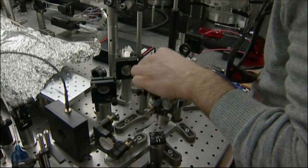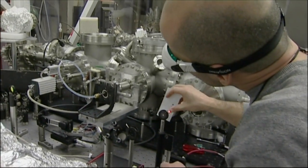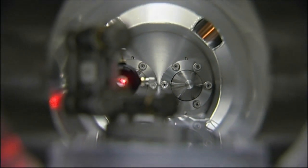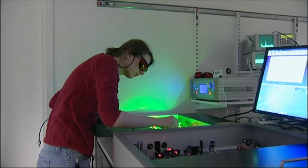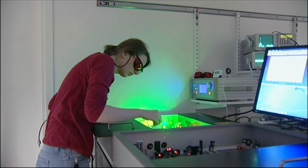We measure the duration of these pulses in attoseconds. One attosecond is 10 to the minus 18 seconds. An attosecond is to a second what a second is to the age of the universe.